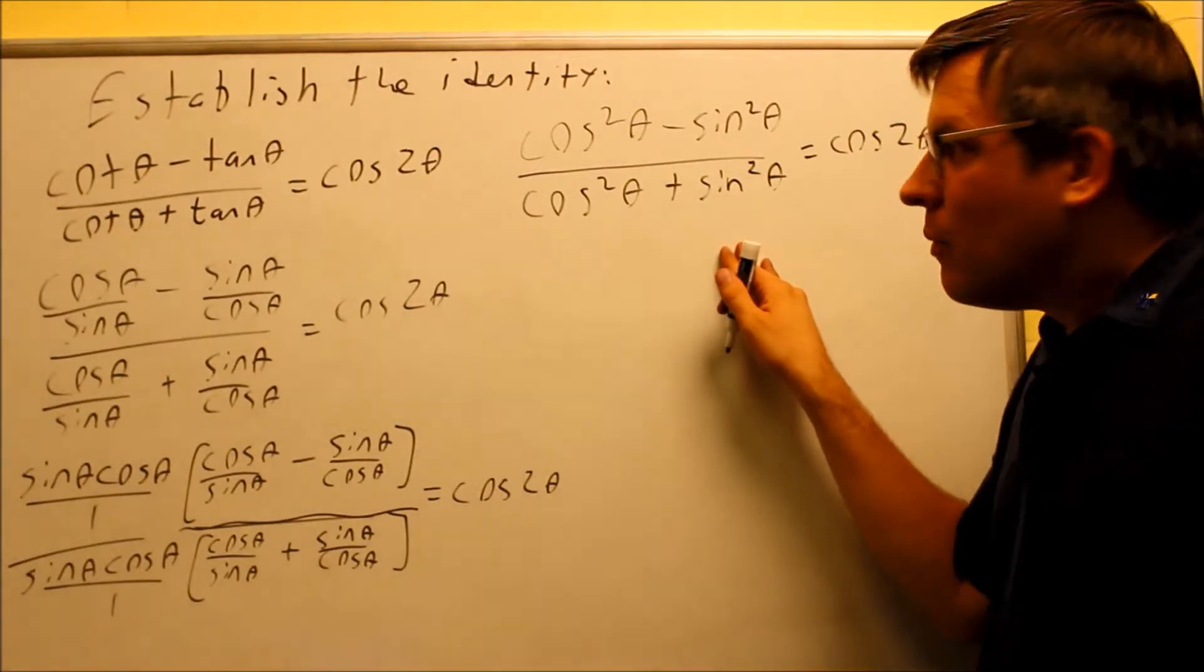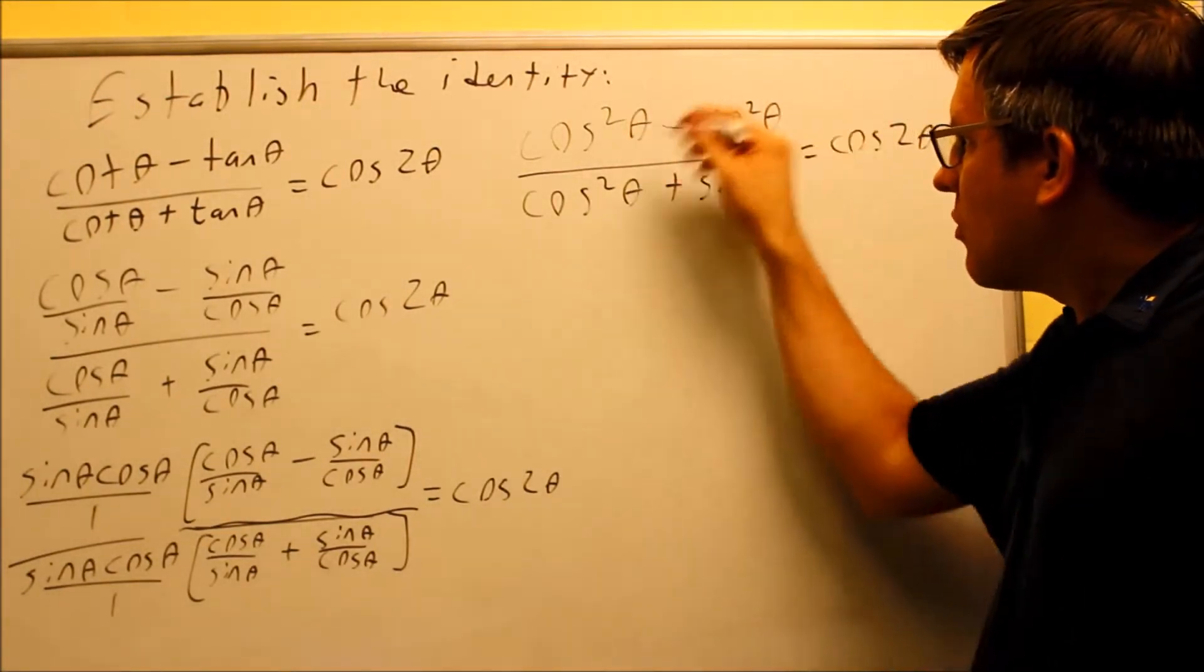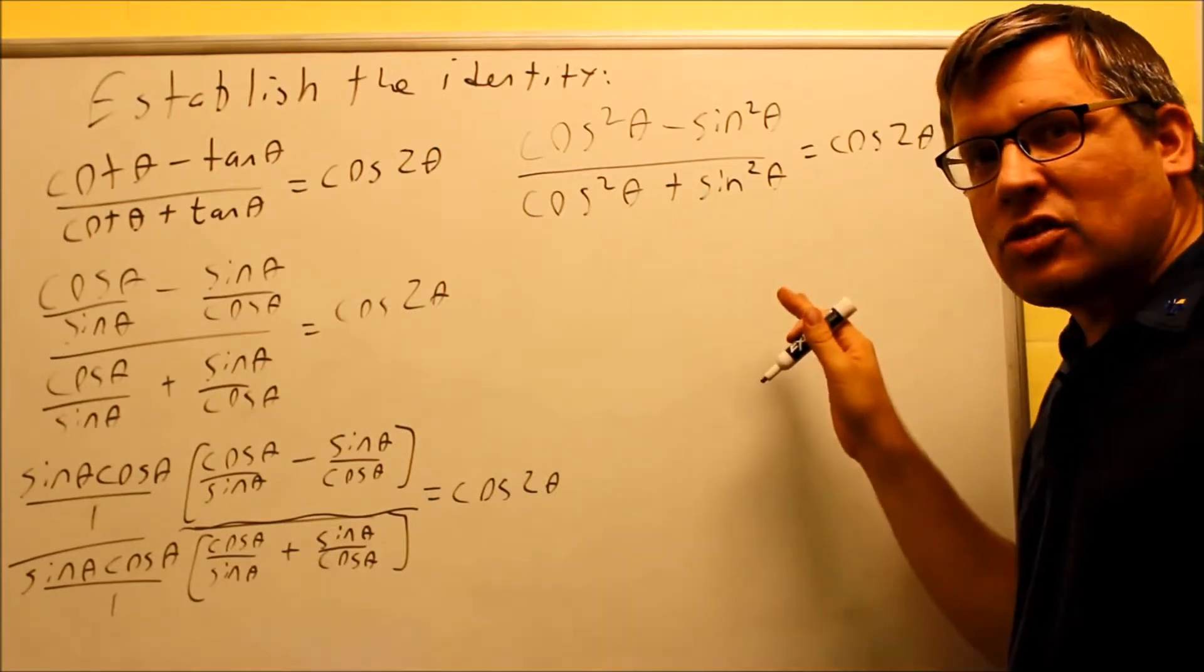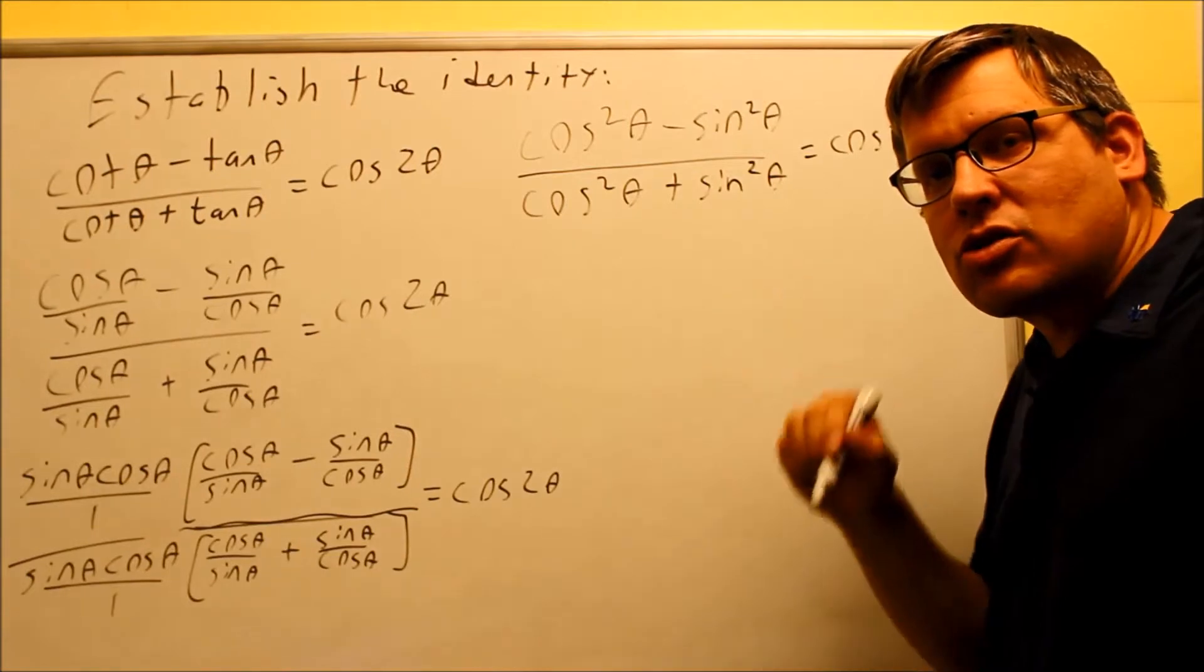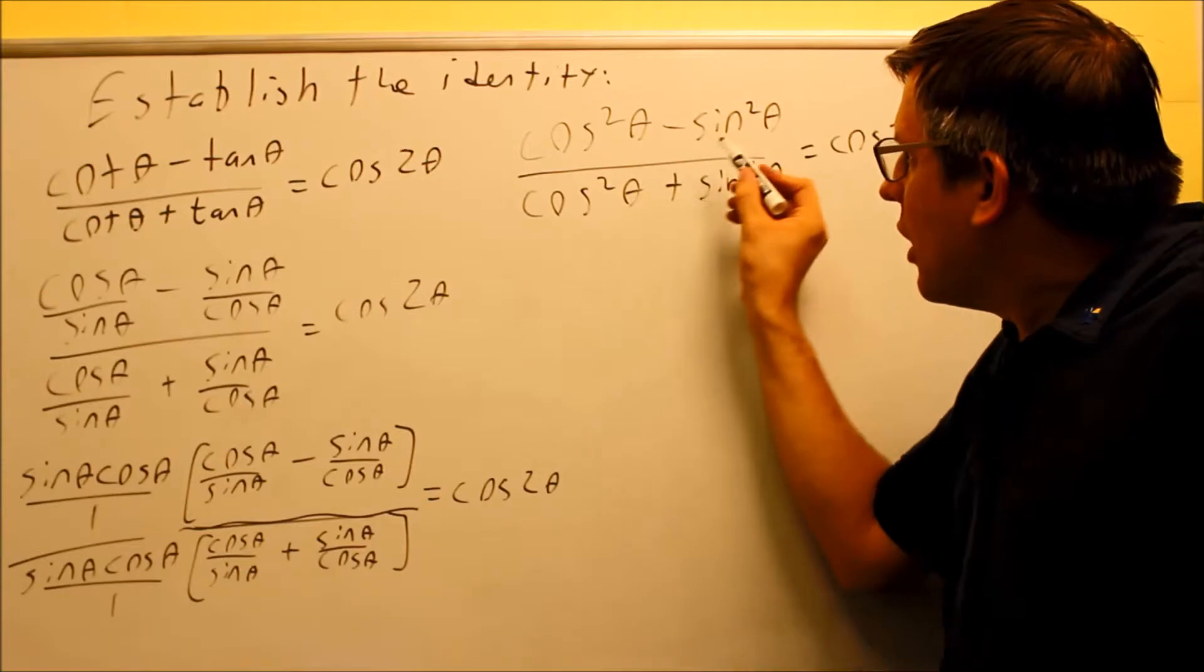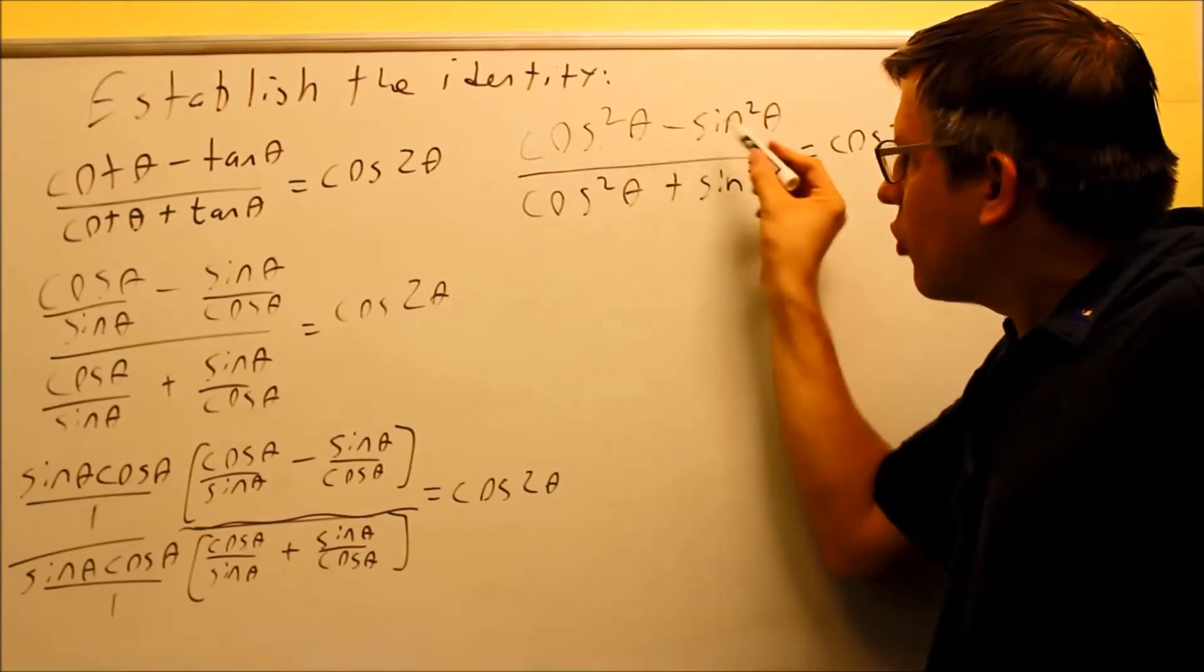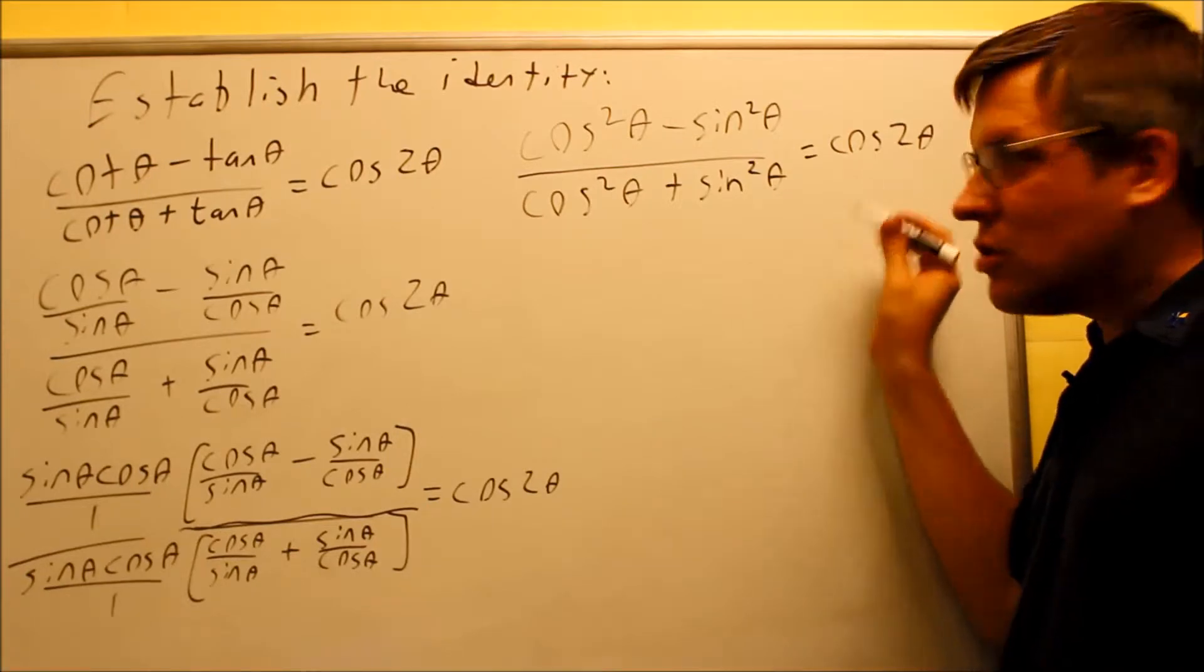Now, once you get down to this point, start thinking about different techniques that we talked about before. Everything is all in terms of sines and cosines, we have no more fractions. So at this point, if you reach a roadblock and not sure what to do, this is when you want to start looking for identities that you can put in. For this part, there is an identity for cosine squared minus sine squared. You should recognize that that is the identity for cosine 2θ.